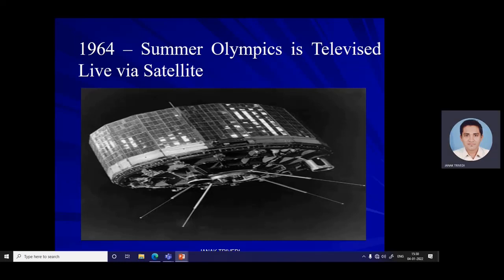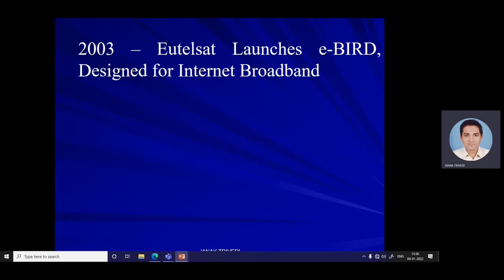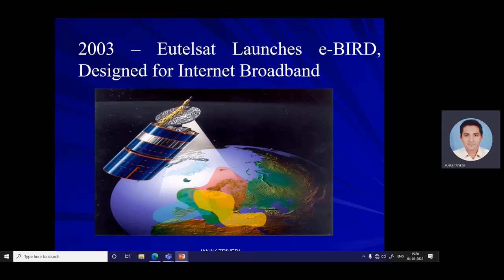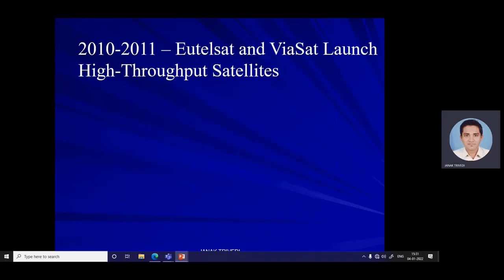In 2003, Eutelsat launched the e-Bird satellite designed for internet broadband — the first successful attempt to provide broad satellite internet. Using four spot beams to target radio signals from the satellite to specific points on Earth, this provided Europe with broadband and broadcast services in areas not served by ADSL and other digital broadband technology at the time. The e-Bird satellite is still in orbit and still providing interactive broadband services.